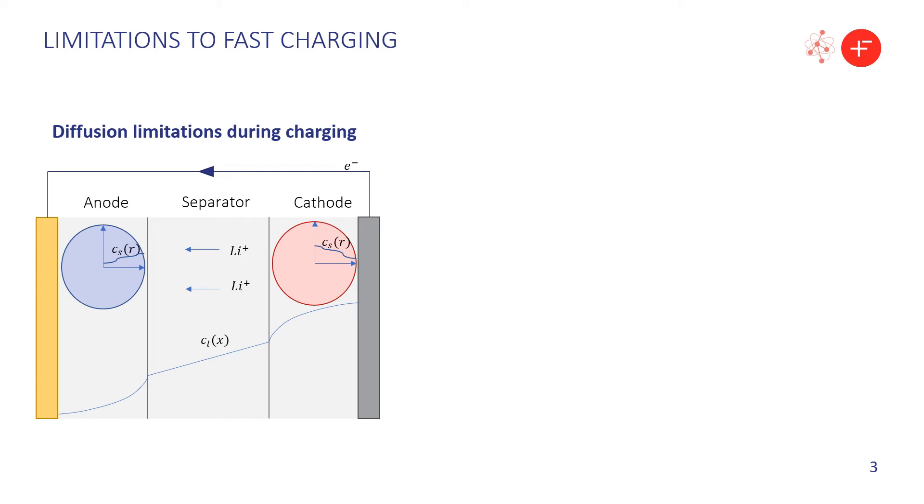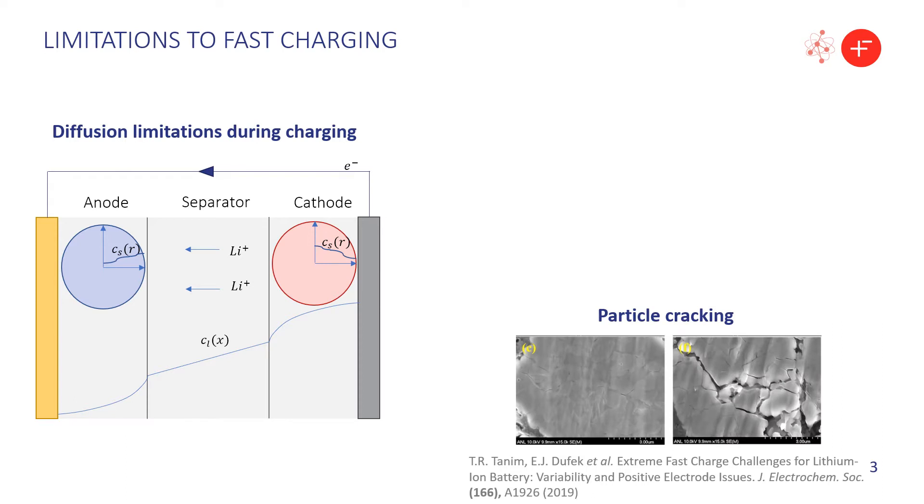Let's start by discussing why charging beyond a certain rate is so difficult. Battery charging requires lithium to travel from the metal oxide cathode to the typically graphite anode, crossing through both the liquid electrolyte and the solid electrodes. While the reactions at the electrodes are generally fast, the rates of diffusion through the electrolyte and the electrode particles are much slower. When we try to charge at a very fast rate, this leads to the buildup of concentration gradients, which can cause unwanted side effects such as particle cracking.